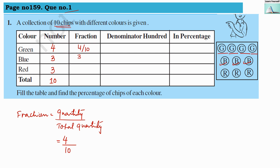Similarly, blue is 3/10 and red is also 3/10. Now when we make the denominator 100: for green it becomes 4/100, which gives 0.04. For blue it will be 0.03, and for red color chips it is also 0.03 when the denominator is 100.